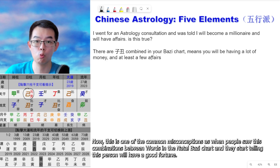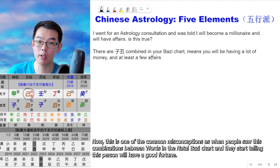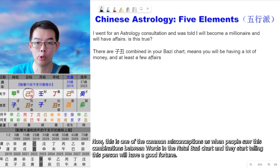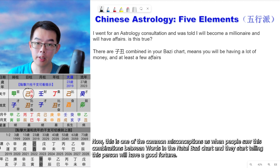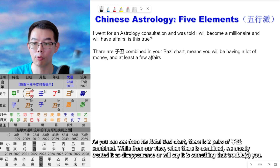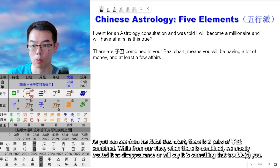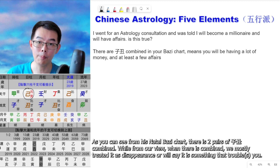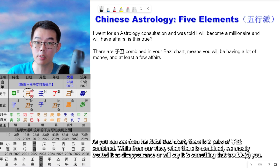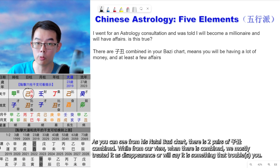This is one of the common misconceptions — when people see there are combinations between earthly branches in the Ba Zi chart, they start telling the person they will have good fortune. For our view, when there is a combination, we mostly treat it as disappearance, or we say this is something that troubles you.